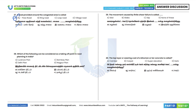38th question: Which of the following can be considered the taking-off point in road planning in India? The taking-off point is the Nagpur Road Plan, the First 20-Year Plan. 39th question: The moment caused by financial failure is called a slide. Option B. 40th question: The top layer or wearing coat of bitumen or tar concrete is called carpet. Option B.